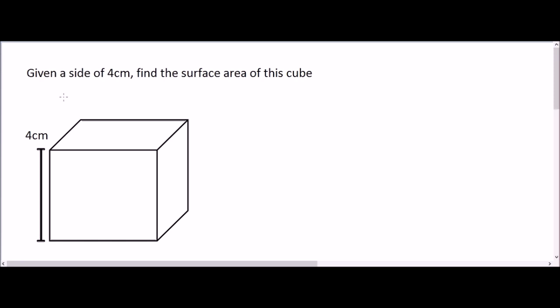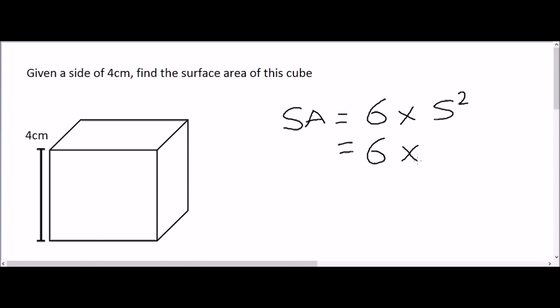In this example: given a side of 4 centimeters, find the surface area of this cube. One of the side lengths is 4 centimeters. We'll use the same formula discussed earlier. Surface area (SA) equals 6 multiplied by s squared — it's always important to write down the formula first so you know what calculations you need to do. Now, 6 is because the cube has six faces, and the side length is 4 centimeters, so we do 4 squared.